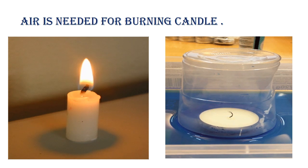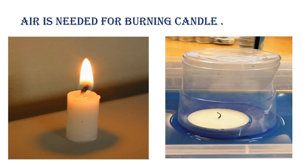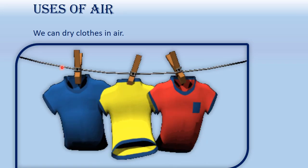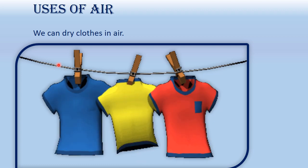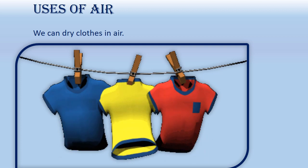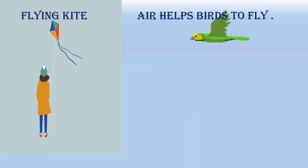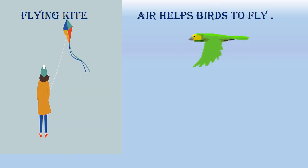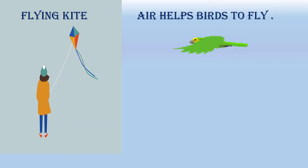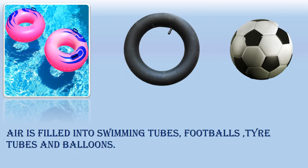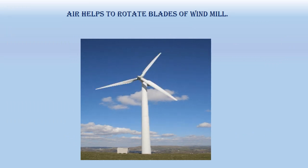These are the uses of air. We can dry clothes in air. A kite can fly in the air — air helps kites to fly. Air is also filled into swimming tubes, footballs, tire tubes, and balloons.